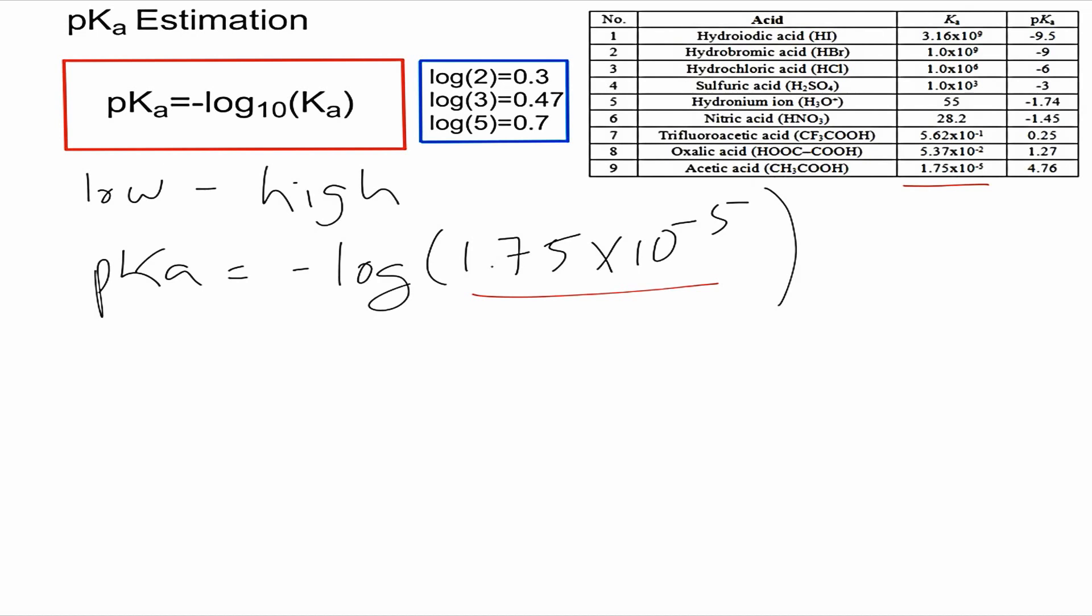The pKa is equal to the negative log of 1.75 times 10 to the negative 5, and you can just split this logarithm into two different logarithms because the numbers are multiplying. You split it into negative log of 1.75, and that's plus - but because our logarithm is negative, we make it negative again - log of 10 to the negative 5. We can solve each separately.